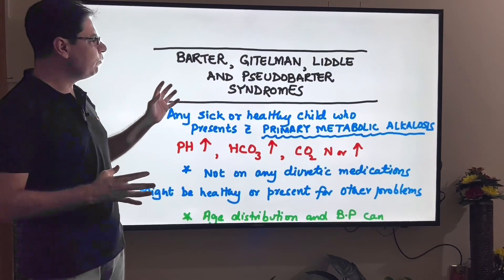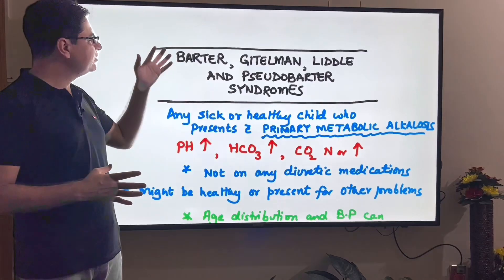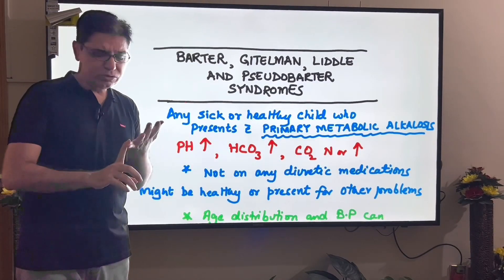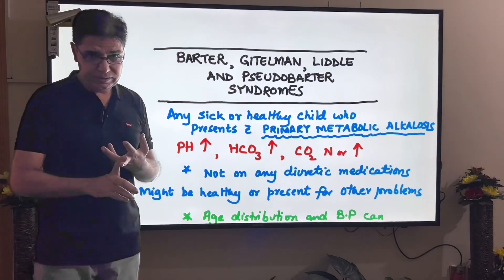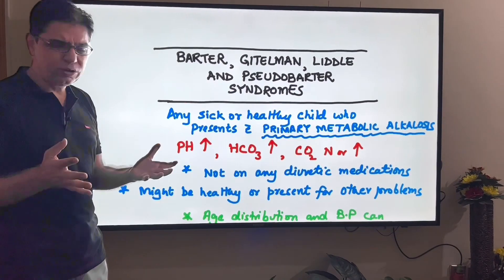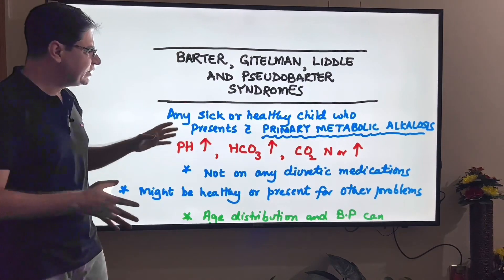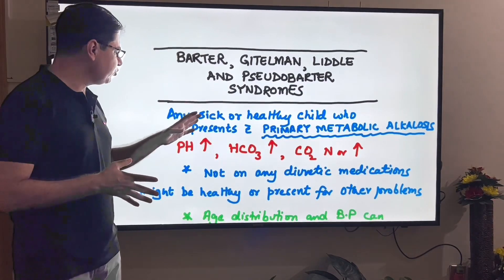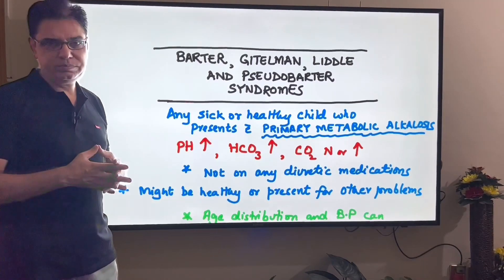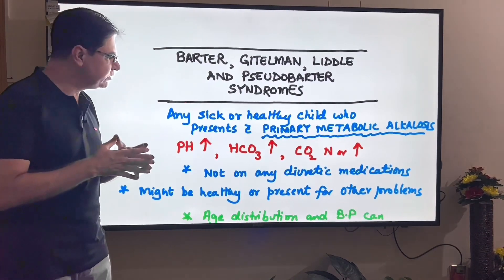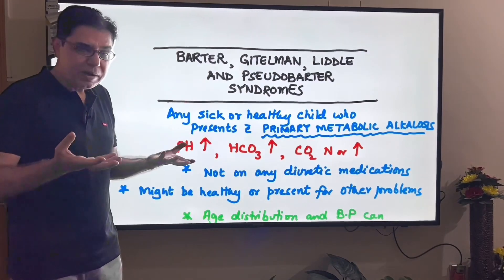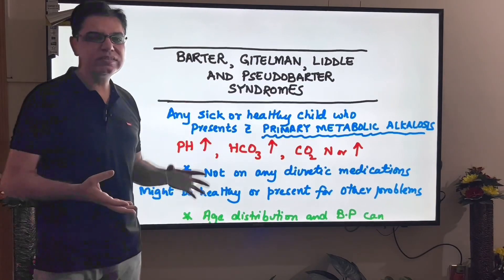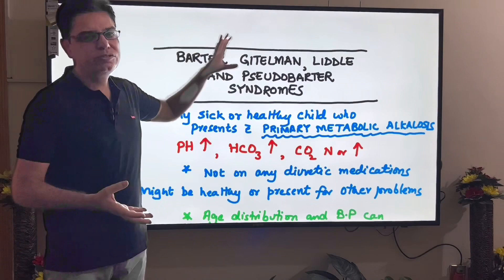The loss of these electrolytes has a profound effect on the body and leads to a wide constellation of signs and symptoms. We would also discuss how these differ from pseudo-Bartter syndrome, which resembles Bartter syndrome but is not a renal pathology. You should suspect these problems in any child — well or sick — who on investigation is found to have primary metabolic alkalosis and is not on any diuretic medications.